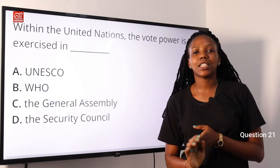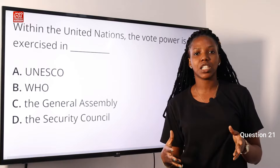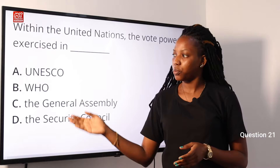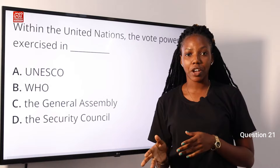First and foremost, the United Nations was established on the 24th of October 1945 and its aim is to ensure security and peace as well as develop friendly relations among nations. Now let's go over to the options. UNESCO, meaning United Nations Educational, Scientific and Cultural Organization, was established on the 16th of November 1945, and it's also to build peace.